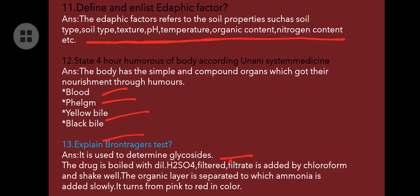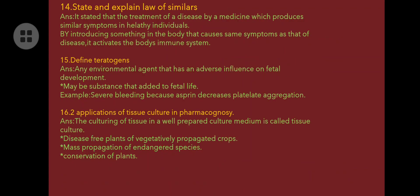Explain Borntrager's test, used to determine glycosides. The drug is boiled with sulfuric acid, filtered, and chloroform is added — shake well. The organic layer is separated, and ammonia is added slowly to the organic layer. It turns pink to red color, indicating the presence of glycosides.